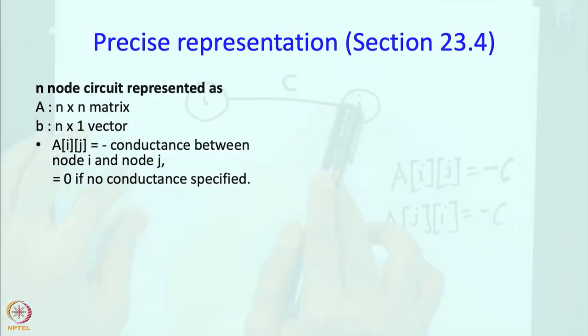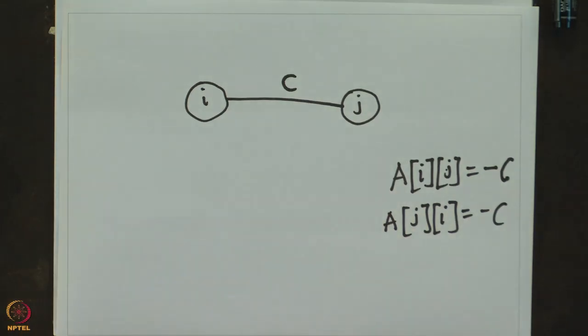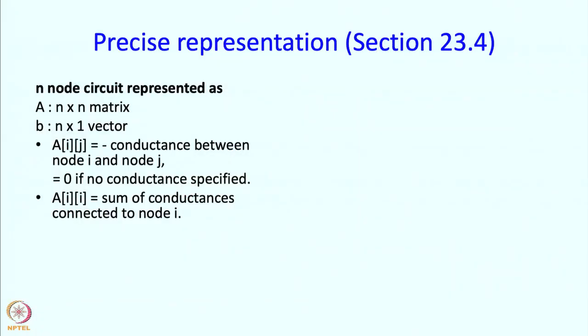If there is no edge then the entry is 0, because no edge is equivalent to 0 conductance. Conductance is indicative of how much current can flow; if there is no edge, no current can flow, so it is natural to say the conductance is 0. A[i][i] is going to be the sum of the conductances connected to node i.